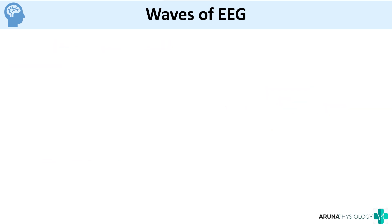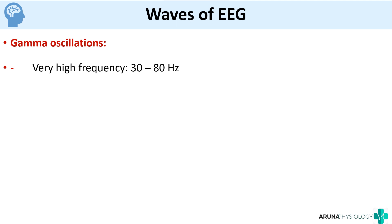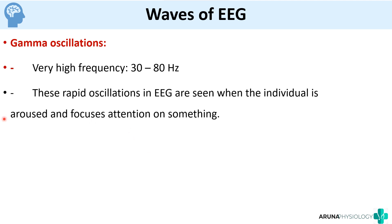We also have something called gamma oscillations — very high frequency waves which are usually seen in individuals who are aroused and focusing attention on something. So when you are concentrating and doing something important, the brain waves are going to be gamma oscillations, which are high frequency waves.